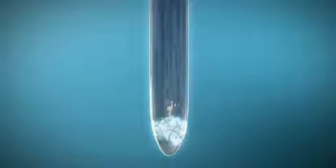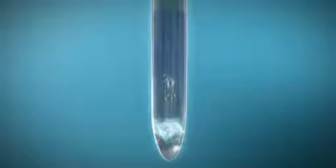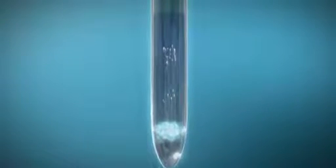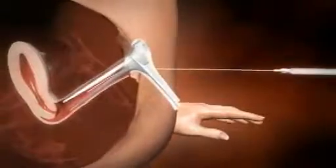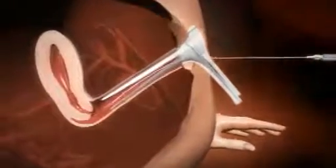With a syringe and fine tube, the prepared sperm cells are then introduced directly into the cavity of the uterus, beyond the mouth of the womb and the cervix. They immediately make their own way towards the uterine tube.